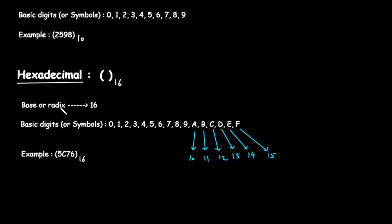Finally, let's explore a system that is incredibly important in computer programming and memory addressing, the hexadecimal number system. The notation for a hexadecimal number is a number in parentheses followed by a small subscript 16. This tells us we are in base 16. The name hexadecimal is a combination of hexa, meaning 6, and decimal, meaning 10. 6 plus 10 equals 16. So, the base or radix of this system is 16.